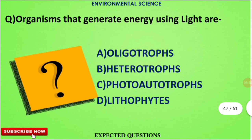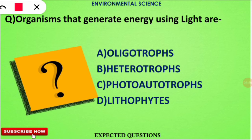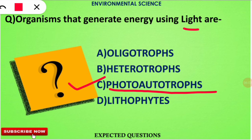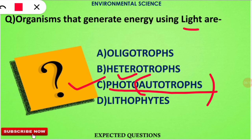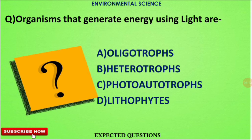The next question is: organisms that generate energy using light are called as what? The correct option is option number C — organisms generating energy using light are called photo-autotrophs. The word 'photo' comes from photons, and 'autotrophs' means those who are able to create their own energy or food.